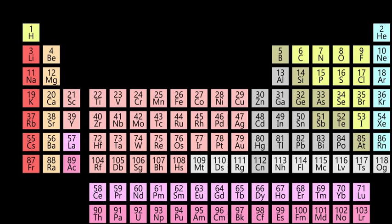In chemistry, a group is a column of elements in the periodic table of the chemical elements.